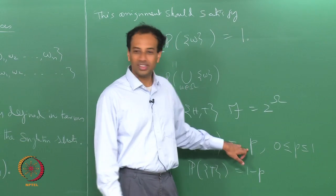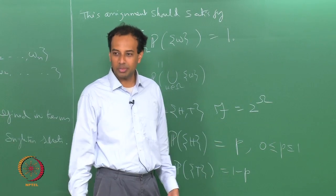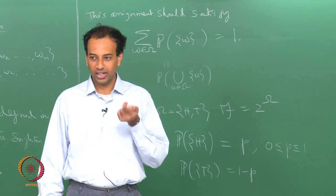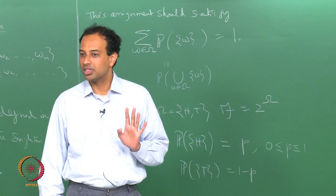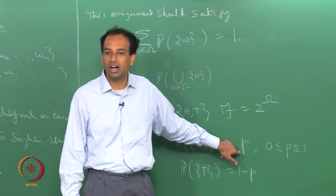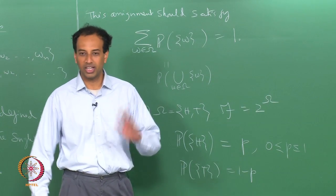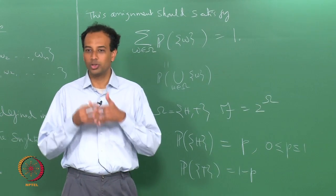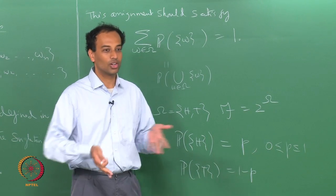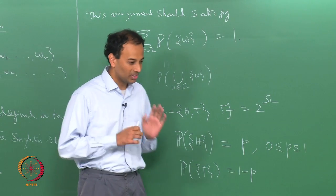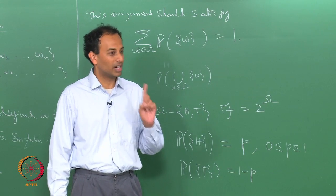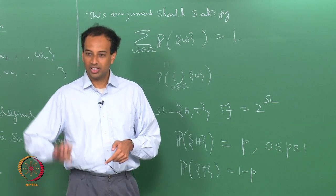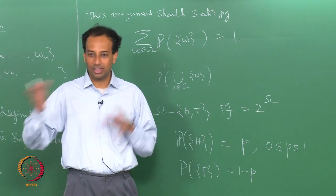Probability theory does not tell you what this little p should be — that should be governed by your practical experience. If you suspect your coin is fair and shows up roughly half the times as heads, you put p equal to one half. If you suspect your coin is slightly biased towards heads, you put p greater than one half. Probability theory does not tell you what the probability of a coin turning up heads is — that is something you have to supply to the theory.